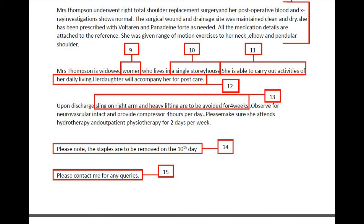When you are providing information, ensure that it is important, correctly placed, and delivers what it is supposed to deliver. In the last paragraph: 'upon discharge, sling on right arm and heavy lifting are to be avoided for four weeks' — this sentence is inappropriately constructed with a wrong connection of dissimilar ideas. The meaning is unclear because the sling is to be kept on for four weeks and the patient is to be refrained from lifting for four weeks, but the sentence implies she must not use the sling and not lift anything. The last sentence, 'please note the staples are to be removed on the 10th day,' is valid but should be part of the discharge plan. Overall, this paragraph is not at all properly organized.